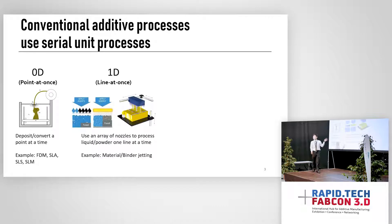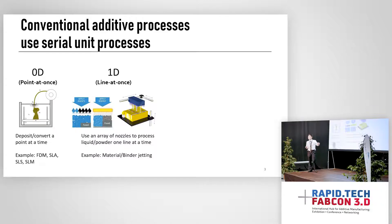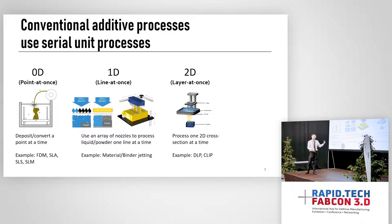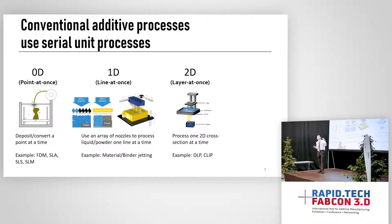For a 1D technology, we are scanning a line at a time. For example, an inkjet printer has an array of nozzles that processes a line at a time and scans the entire volume. Moving forward to 2D technologies, we process an entire plane at a time — for example, DLP technology and Carbon 3D. You could say it's almost 2.5D because there is a continuous layer, but they are still processing one layer at a time.